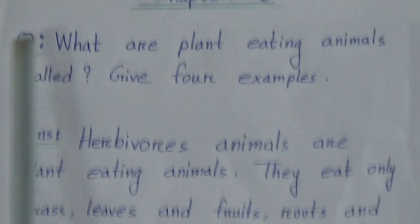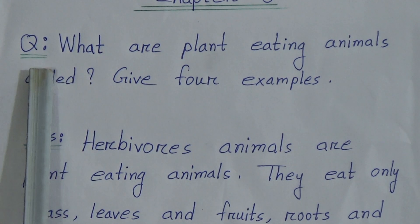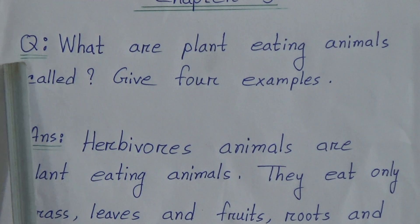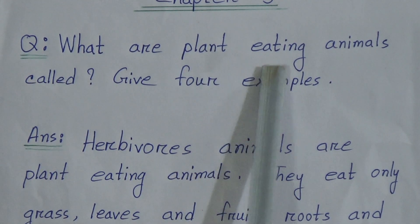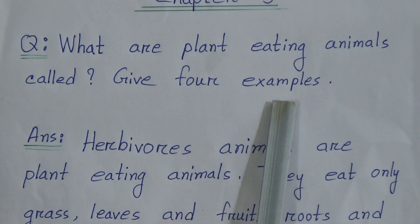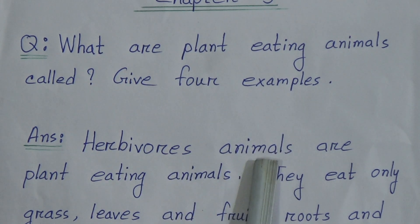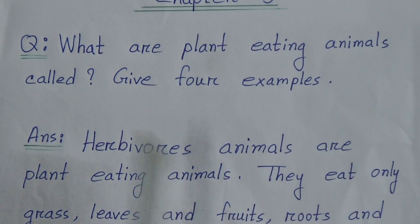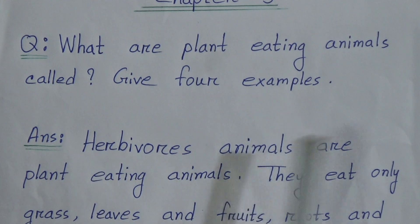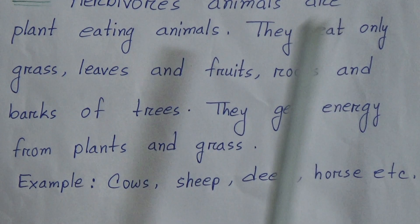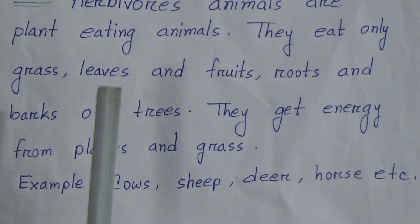Now we come to the question answer section. Here is only one question and an answer. The question is: what are plant-eating animals called? Give four examples. Answer: herbivorous animals are plant-eating animals. They eat only grass, leaves, fruits, roots, and barks of trees.